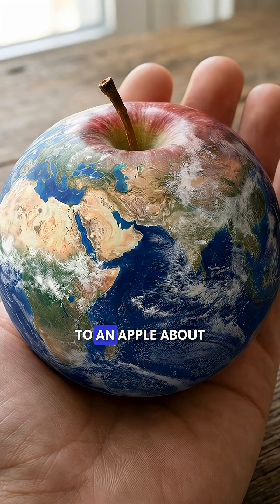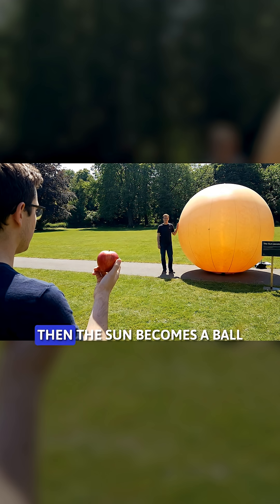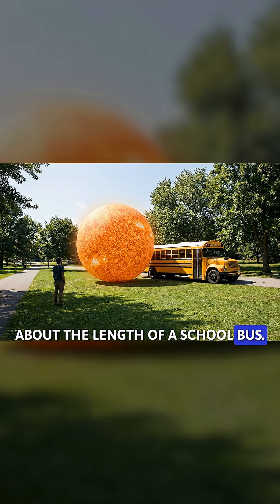Let's shrink the Earth down to an apple, about 7 centimeters. If the Earth is this small, then the Sun becomes a ball just 7 meters away, about the length of a school bus.